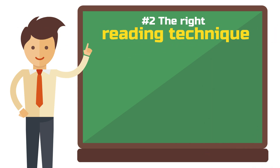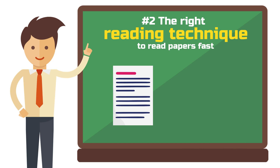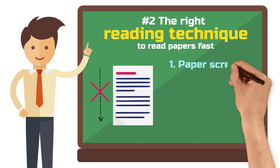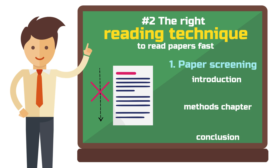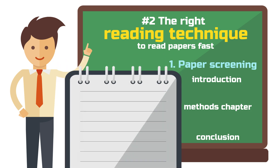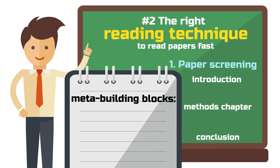Step 2: The right reading technique to read papers fast. A suboptimal approach would be to start with the first paper and work through it from beginning to end. Instead, first approach the paper with a paper screening: read the introduction, methods chapter and conclusion. These parts of a scientific paper are what I call meta-building blocks. They are not purely content-based sections but report one level higher or above the contents.